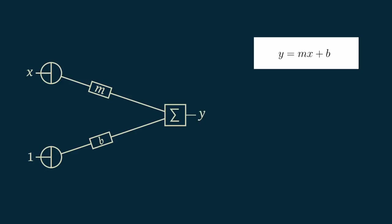This is a graphical representation of y equals mx plus b. On the far left, the circular symbols just indicate that the value is passed through. The rectangles labeled m and b indicate that whatever goes in on the left comes out multiplied by m or b on the right.